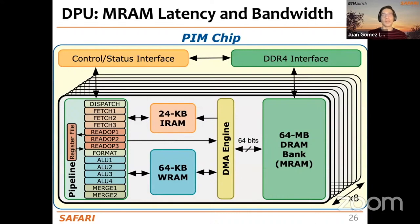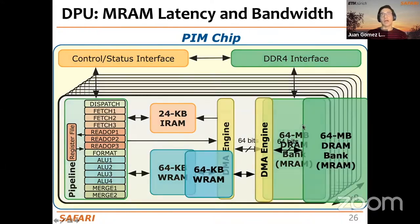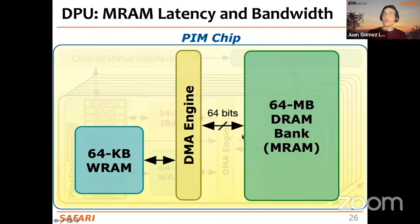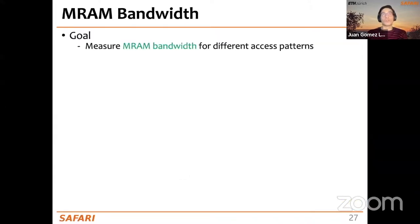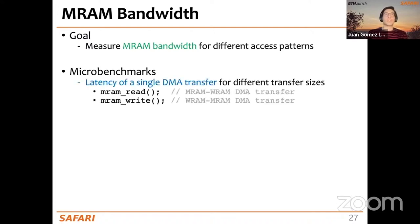Now it's time to check how fast we can access data from MRAM — how fast we can move operands between MRAM and WRAM using the DMA engine. Our goal is to measure the MRAM bandwidth for different access patterns. We create several microbenchmarks. The first measures the latency of a single DMA transfer for different transfer sizes. The UPMEM SDK provides two instructions: MRAM_read and MRAM_write, moving data between MRAM and WRAM in either direction.